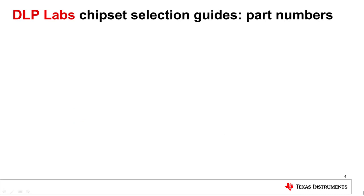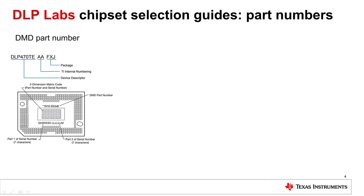Each chipset component has its own unique part number to be easily identifiable and differentiated from other parts. The DMD part number consists of a device descriptor — for example, DLP470TE or DLP470TP — TI internal numbering, and the package type, for example FXJ.